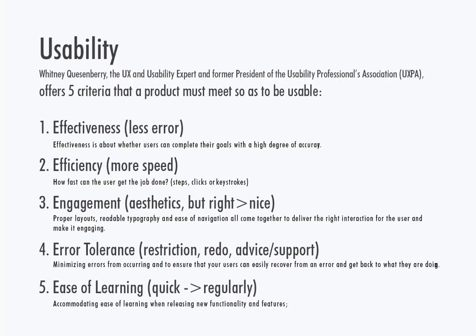The second is efficiency — it's about how fast the user can get the job done: how many steps, clicks, or keystrokes. As mentioned before, 21st-century users will leave your program if it doesn't give them the speed they want. The third is engagement — it's about aesthetics, but being right is better than being nice. Design with the right color or layout in the right context is better than just having a nice picture. Proper layouts, readable typography, and ease of navigation all come together to deliver the right interaction and make it engaging.